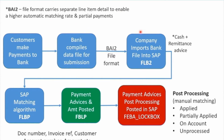From an SAP perspective, we import that file from the bank into SAP — this is really the cash and remittance advices. SAP then applies an automated matching algorithm to match the payments to open invoices. It can use different things like document numbers, invoice reference numbers, amounts, and so on to automatically match where possible. When an automated match happens, the payment advice and amounts are automatically posted.